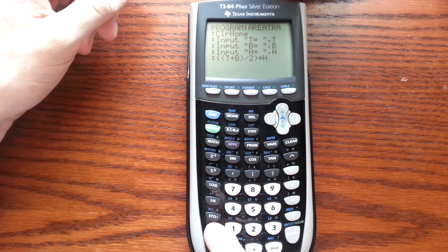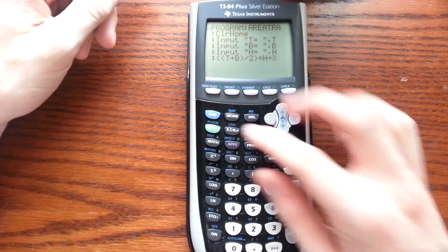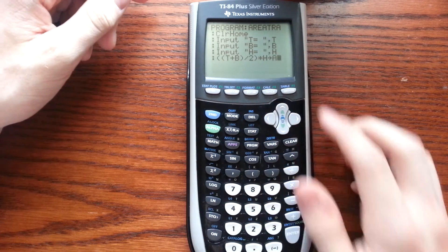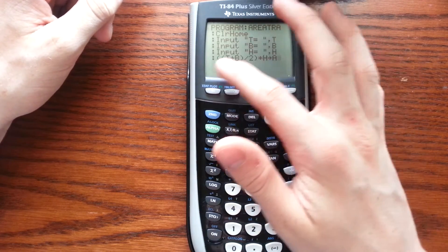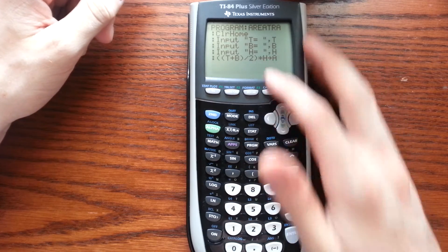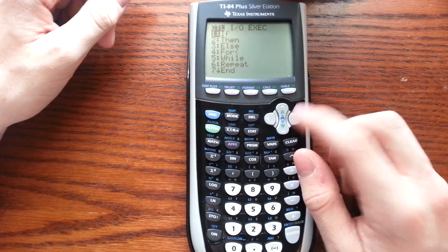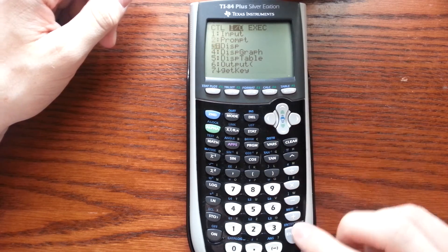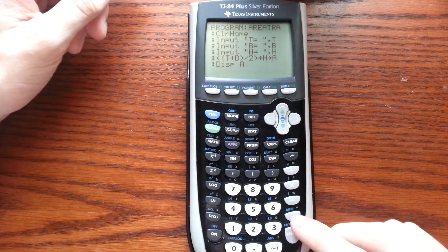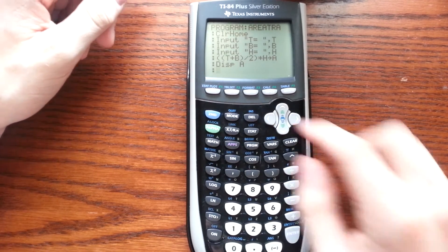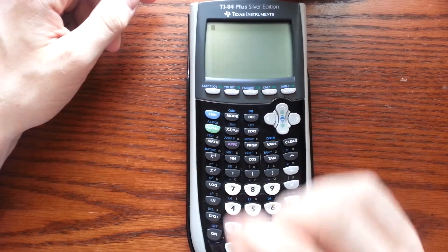Now from here, we're going to go to STO and we're going to name it A. So it's solving everything out, inputting our values into the formula, and then it's going to A. So what we're going to want to come down to is Enter, Program, Over, Display, A. From here, we can press Enter, Second, Quit, and we're done.